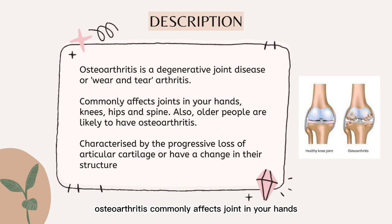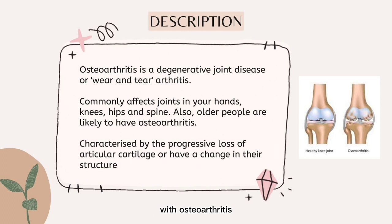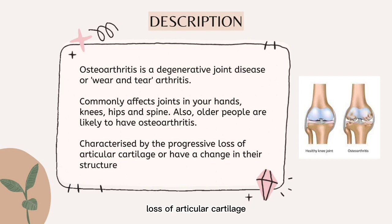Osteoarthritis commonly affects joints in your hands, knees, hips and spine. With osteoarthritis, it is characterized by the progressive loss of articular cartilage or changes in their structure.